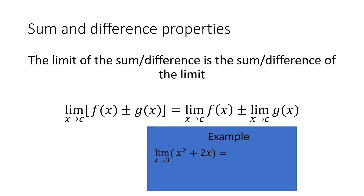So if we have the limit as x approaches 3 of x² + 2x, we could break that up and say that's the limit as x approaches 3 of x² plus the limit as x approaches 3 of 2x. The limit of x² is 9, the limit of 2x is 6, so your complete answer is 15. The sum of the limits is the limit of the sum.